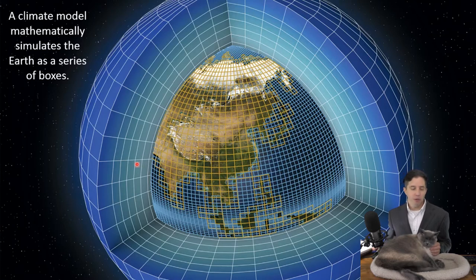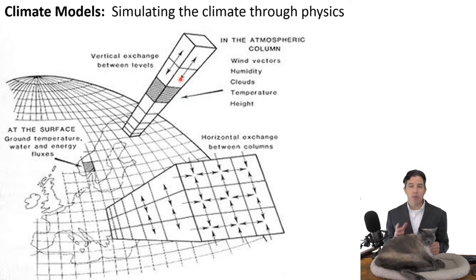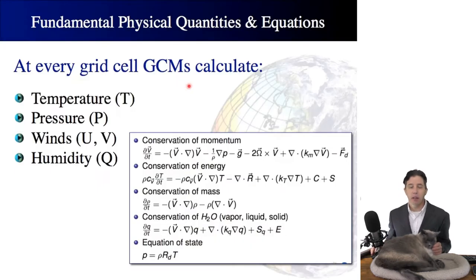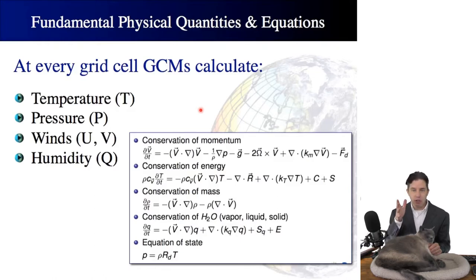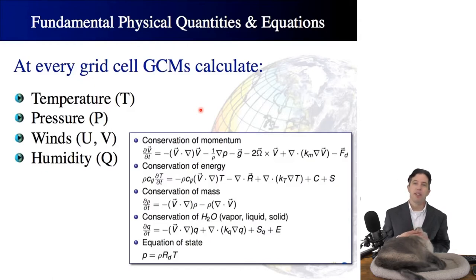We know all of the physics that goes on inside each one of these cubes in the atmosphere, inside each cube in the ocean, and what processes are going on inside each square over the land. For each cube in the atmosphere, we know all the physics, thermodynamics, fluid dynamics, etc. We make a computer program that does the math within each cube in the atmosphere and ocean, and calculates what's happening between the squares on the continent and the cubes in the atmosphere — so it's doing an exchange calculation.